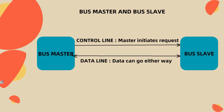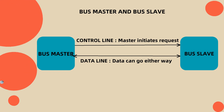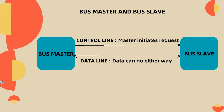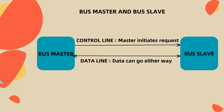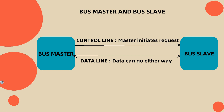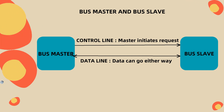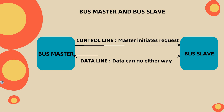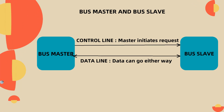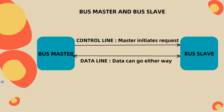Now we will discuss bus master and bus slave. Master-slave is a model of asymmetric communication or control where one device or process controls one or more devices or processes and serves as their communication hub. Here the controller is the bus master and the worker is the bus slave. The bus master initiates requests through the control line which is received by the bus slave, and then the bus slave starts to transfer data through the data line. Data can go either way.